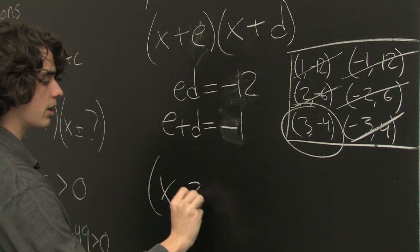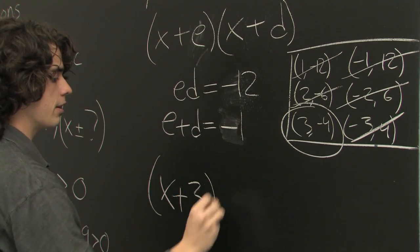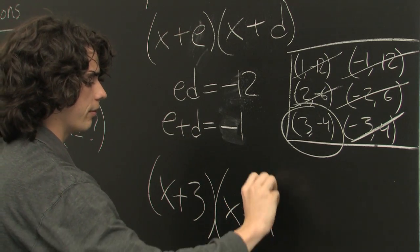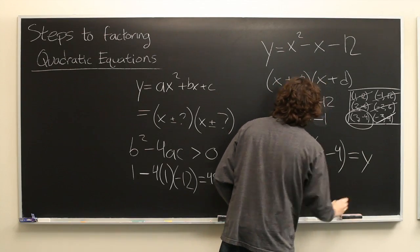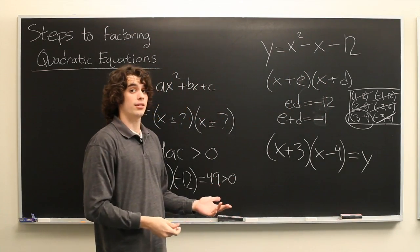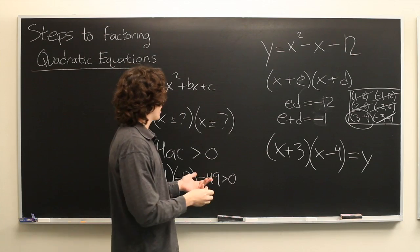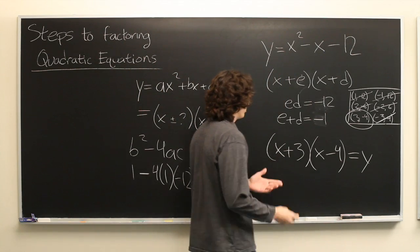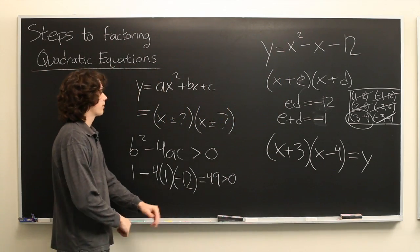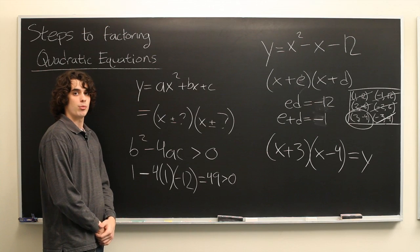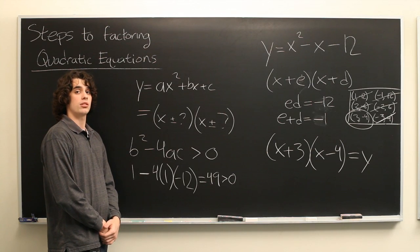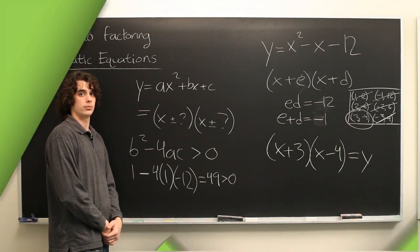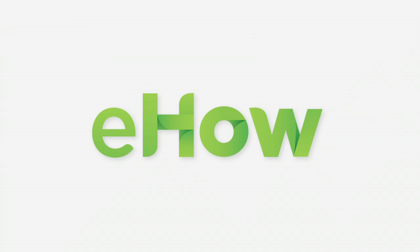So we can simply plug those in — we get x plus 3 times x minus 4. You can double check that these are the correct values by simply multiplying this out. My name is Ryan Malloy and we've just discussed the steps to factoring a quadratic equation.